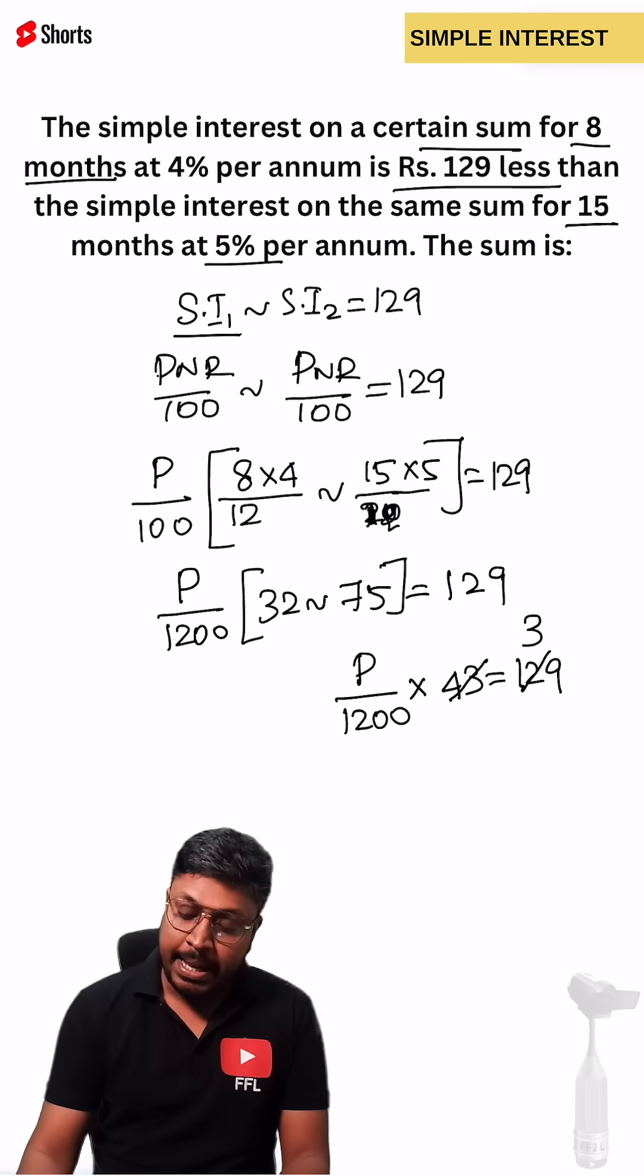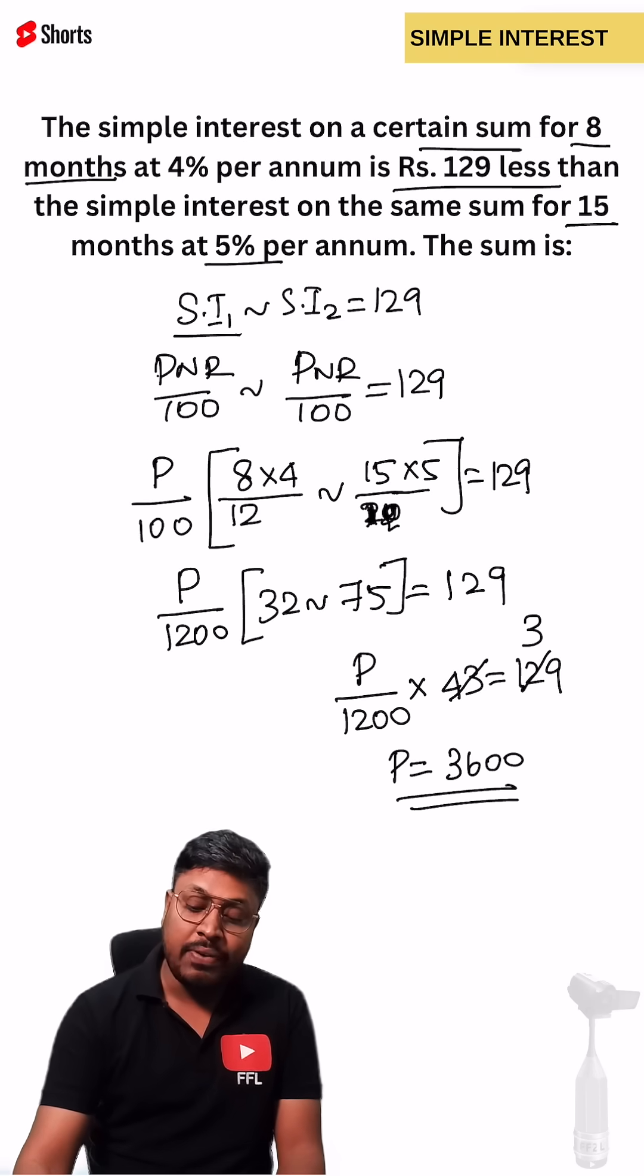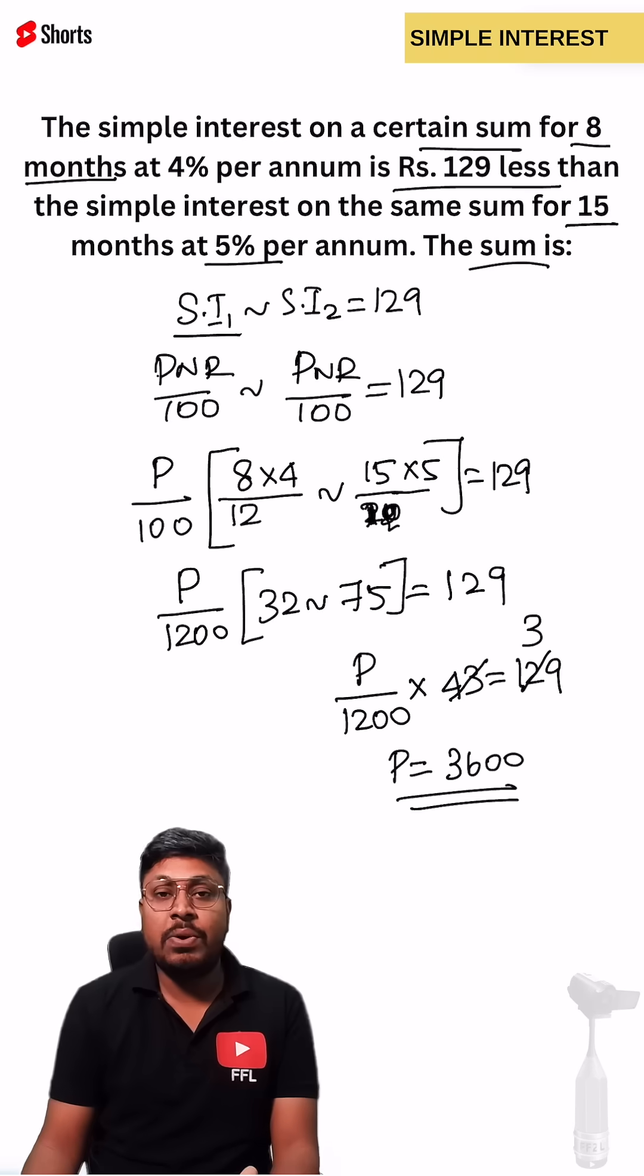We can cancel this 3 times. So principal equals 3600. According to the question our target is to find the sum, so sum is 3600.